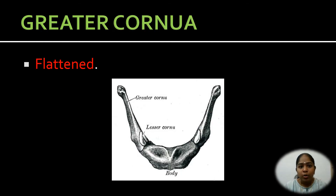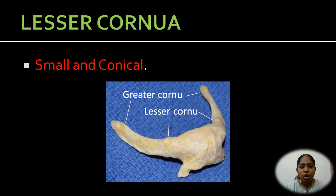The greater cornua are flattened, attached to the lateral part of the body, from which they project backwards and laterally. They have upper and lower surfaces and medial and lateral borders. The posterior end of each cornua is enlarged to form a tubercle. The lesser cornua are small and conical, projecting upwards and laterally from the junction of the body and the greater cornua. The union between the body and the greater cornua is cartilaginous in the young but fused in later life, and the lesser cornua are attached by fibrous tissue.